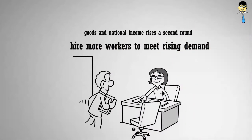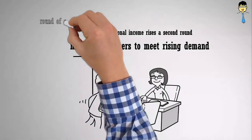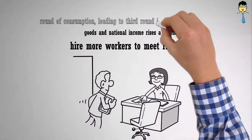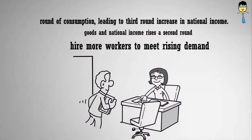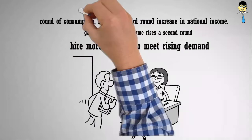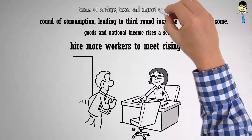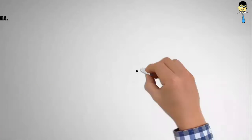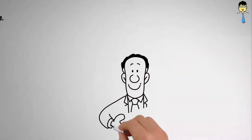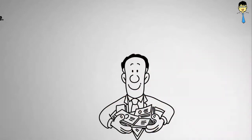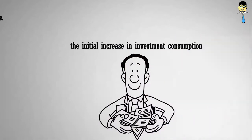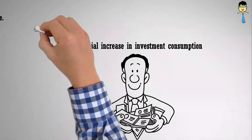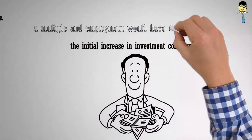This increase in national income induces another round of consumption, leading to a third round increase in national income. With each increase in income, the amount of leakages in terms of saving, taxes, and import expenditure rises. This process continues until leakages have risen by the same amount as the initial increase in investment consumption, by which national income would have increased by a multiple and employment would have risen significantly.